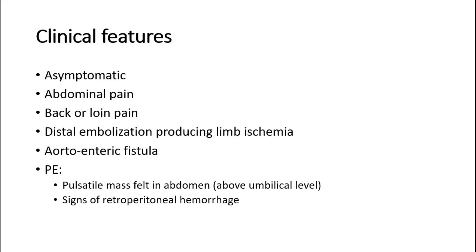Many abdominal aortic aneurysms are asymptomatic and are simply detected on incidental finding or screening. Symptomatic patients with a AAA can present with abdominal pain, back or loin pain, distal embolization producing limb ischemia, or aortoenteric fistula.